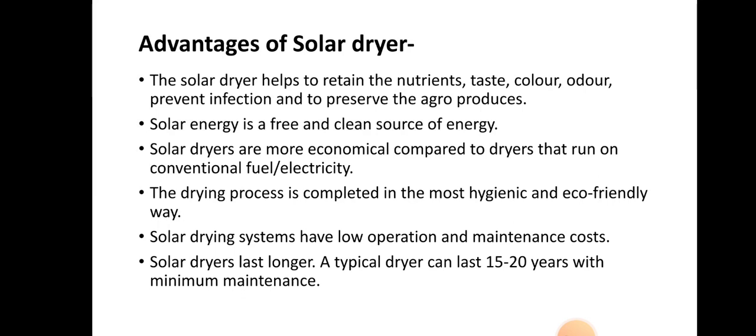Solar dryers last longer — a typical dryer can last 15 to 20 years with minimum maintenance. Once you install a solar dryer, it will work for a long time with only simple maintenance required, making it economical and affordable for common people. Those are the advantages of the solar dryer, but along with these advantages, there are also disadvantages and limitations.